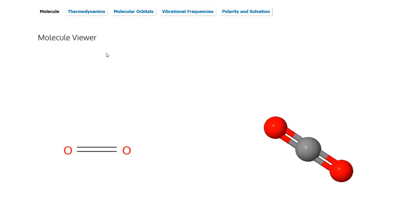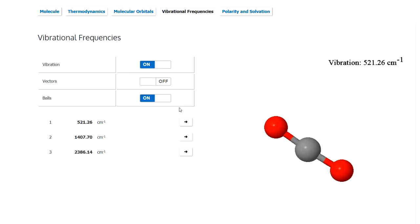There are four different possibilities. We can get thermodynamic properties, molecular orbitals, vibrational frequencies, and polarity. I'm going to focus on vibrational frequencies.